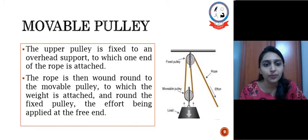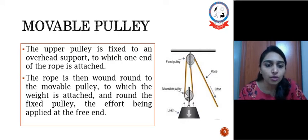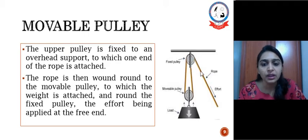Next is movable pulley. Moveable pulley, we are using two pulleys inside it where one pulley the upper pulley is fixed to an overhead support to which one end of the rope is attached. Here we can see one end of the rope is attached to the fixed pulley, from here rope is then wound round to a movable pulley and to which the weight is attached. This rope is again wound round to fixed pulley and on another hand effort is being applied.